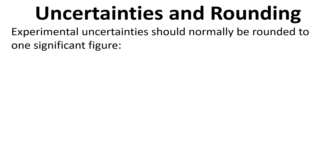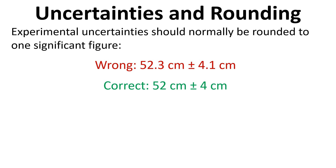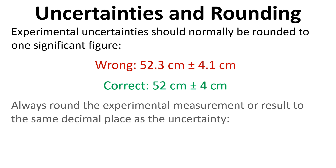Just a few words on uncertainties and rounding. We typically want to round the uncertainty to one significant figure. For example, a measurement of 52.3 centimetres plus or minus 4.1 centimetres — we round 4.1 to one significant figure, giving 4 centimetres. We then round the measurement itself to the same number of decimal places as the uncertainty. Step one: round your uncertainty to one significant figure. Step two: round your measurement to the same number of decimal places.